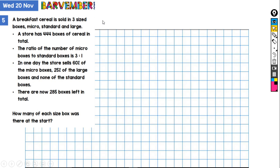Right, let's have a look at this. A breakfast cereal is sold in three size boxes, micro, standard and large. A store has 444 boxes of cereal in total. The ratio of the number of micro boxes to standard boxes is 3 to 1. In one day, the store sells 60% of the micro boxes, 25% of the large boxes and none of the standard boxes. There are now 285 boxes left in total, and we're asked how many of each size box was there at the start.